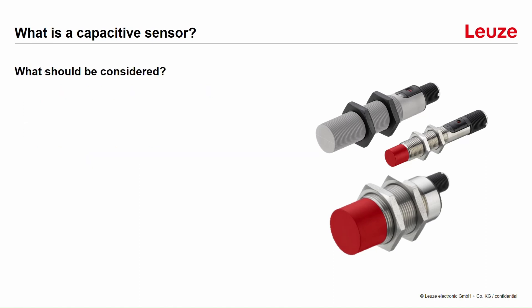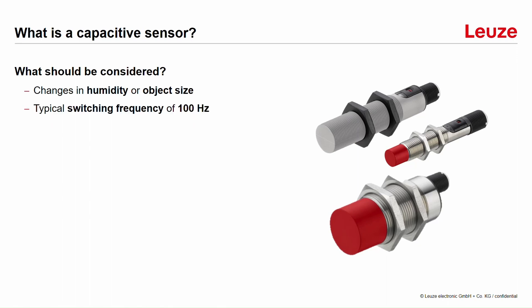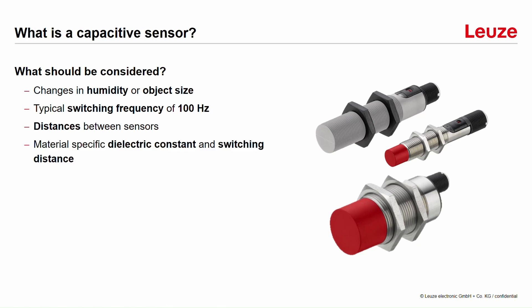What should be considered when you are using a capacitive sensor? First of all, you need to consider that there may be changes in the humidity or the size of the objects you want to detect. Besides, there are typical switching frequencies that have to be considered. You also need to care about the distances between the sensors. And a very important point is the switching distance and the material-specific dielectric constant — but what this means will be explained later.